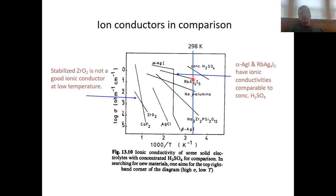The cation conductivities tend to be less temperature-dependent than the anion conductivities. Comparing the steepness of the slopes for the cation conductors, they tend to be smaller than the slopes for the anion conductors. Anion conductors such as fluoride or zirconium dioxide tend to have only very small ionic conductivities near room temperature. Only at very high temperatures do these ionic conductivities become significant, but then they can very steeply increase to reach values similar to concentrated sulfuric acid at around 1000 degrees Celsius.